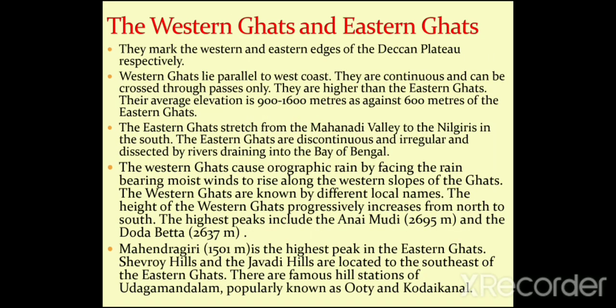The Western and Eastern Ghats mark the western and eastern edges of the Deccan Plateau respectively. The Western Ghats run parallel to the west coast along the Arabian Sea. They are continuous and can be crossed through passes only. They are higher than the Eastern Ghats, with an average elevation of 900 to 1600 meters, compared to 600 meters for the Eastern Ghats.